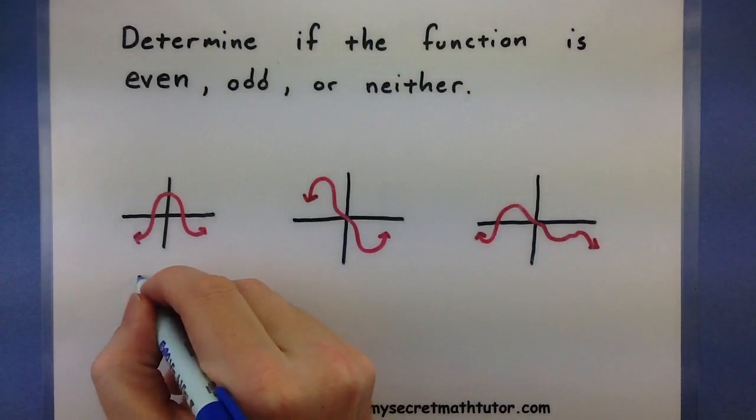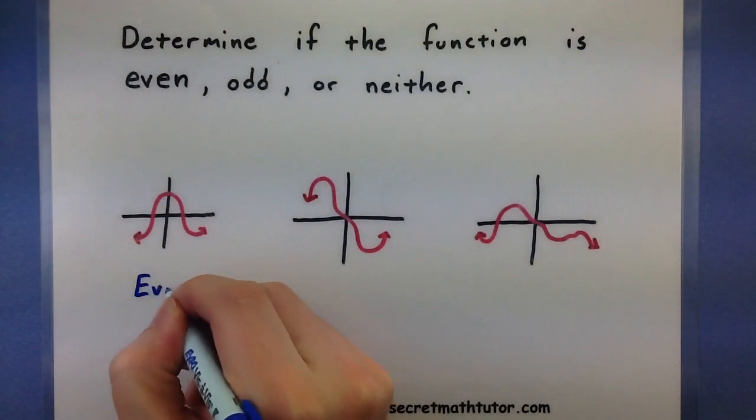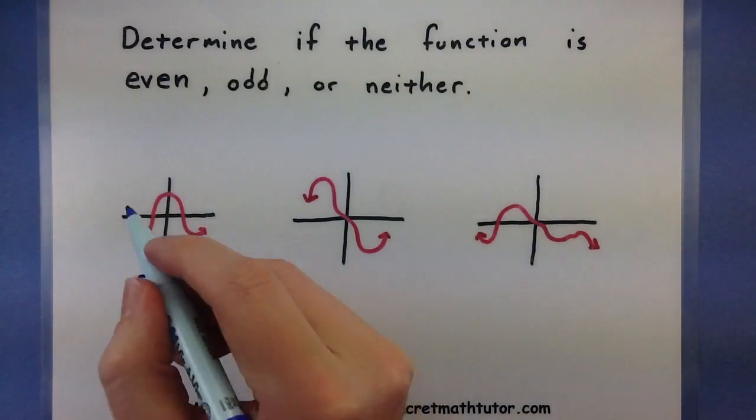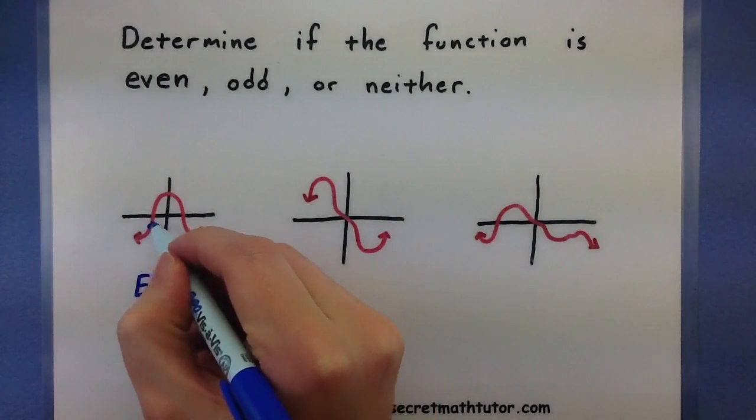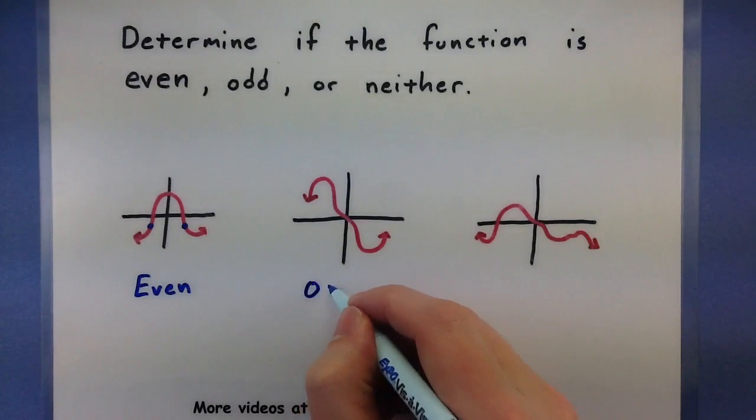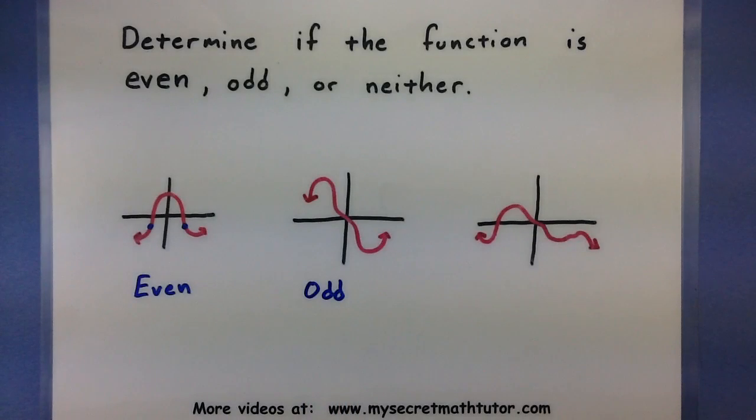For example, if I have an even function, this means that I can fold it along the y-axis and it'd match up with itself. For an odd function, this means that it has origin symmetry, or that you could rotate it 180 degrees and it would match up with itself.